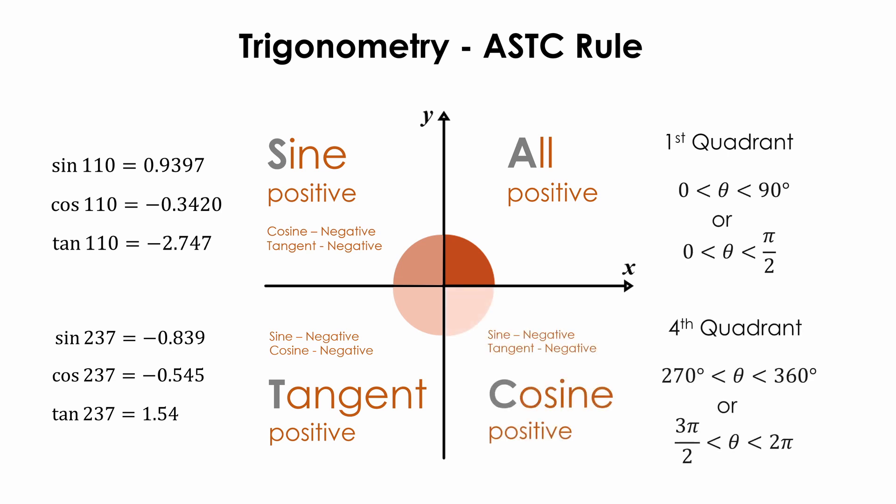In the fourth quadrant, which is represented by the letter C, only the cosines of angles here are positive. For example, cosine 300 degrees equals 0.5, while sine 300 degrees equals minus 0.866, and tangent 300 degrees equals minus 1.32.